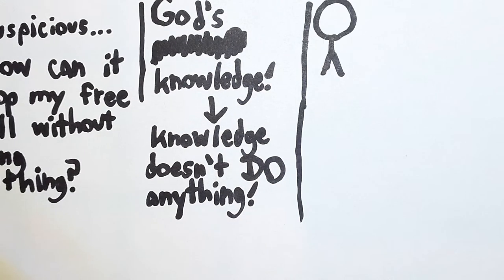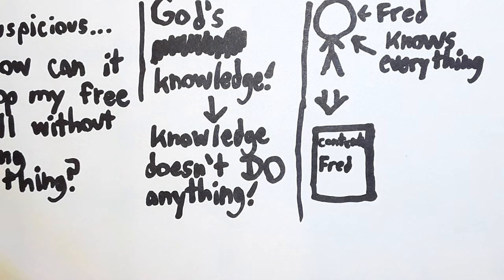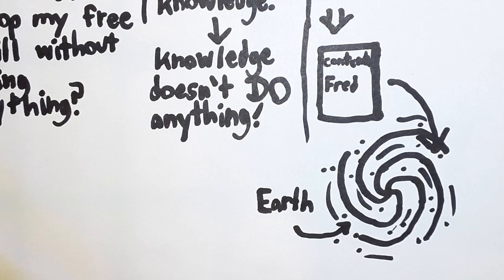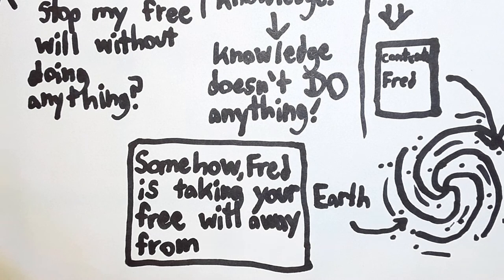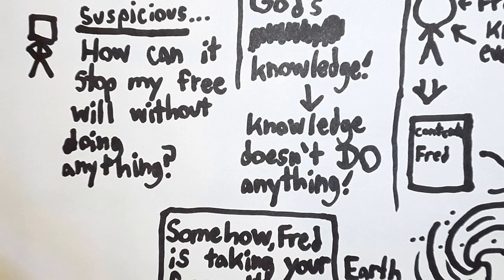To illustrate, imagine we have Fred here. Fred is omniscient. You've never met Fred because he's trapped inside a box which is floating through space on the other side of the galaxy. Now, if the logic of this objection worked, then somehow Fred should be able to take away your free will while trapped inside that box, even if God didn't exist. That's really weird. So, suspicion about this argument is warranted.